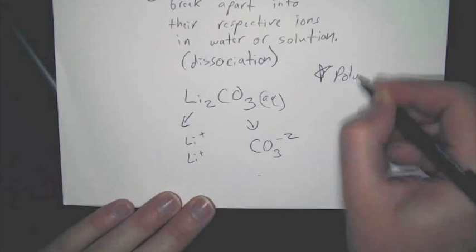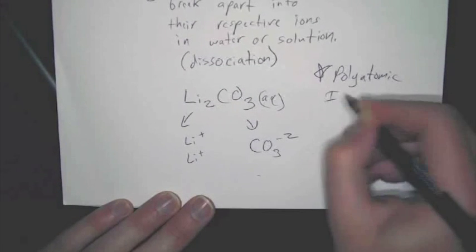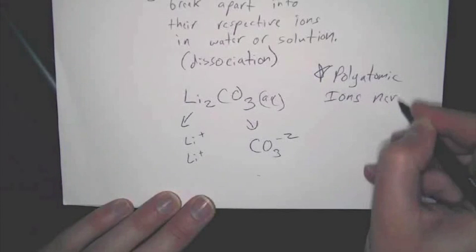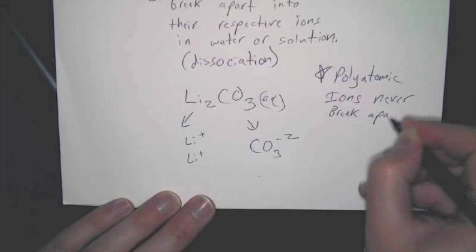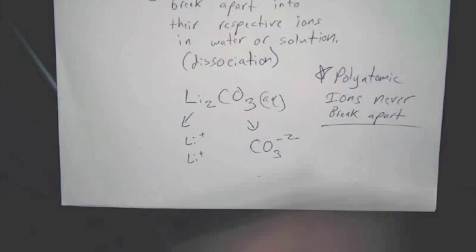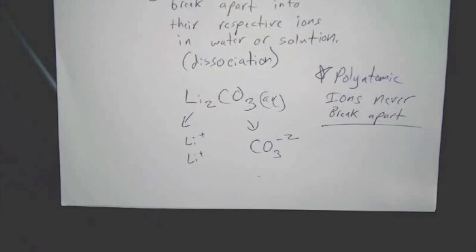Now, since this is aqueous, here's how this actually works. So lithium would break apart into Li+ and Li+, and then you would have CO3 with a negative 2 just sort of floating around. That's how it would dissolve. Do you understand why there's two lithiums there? Yes. Because you had two. Now, there's one other thing to notice. You see how CO3 stays together? So polyatomic ions never break apart in solution. They always stay together, at least as far as you're concerned. Because that's the charge on carbonate. If you look CO3 up, that's the charge. So that's a really important thing to know and to remember.